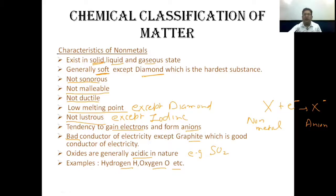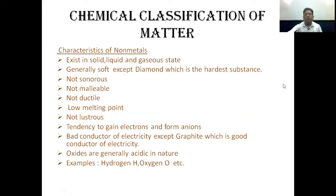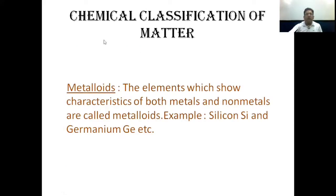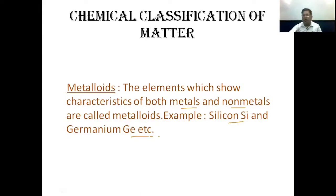The next type of element is metalloids. Metalloids are those elements which show characteristics of both metals and non-metals; they show intermediate characters. Examples are silicon (Si) and germanium (Ge). So elements exist in three forms: metals, non-metals, and metalloids.